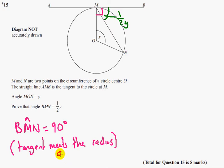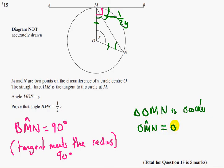We know that triangle OMN is isosceles. Because OM is equal to ON as the radius of the circle. So that means these two angles are the same. Angle OMN is equal to angle ONM.